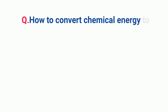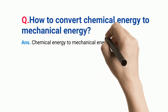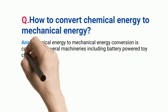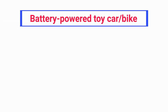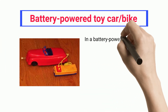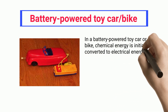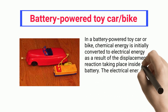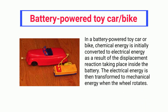How to convert chemical energy to mechanical energy? Chemical energy to mechanical energy conversion is common in several machineries, including battery-powered toy cars and bikes, cars, clocks, etc. In a battery-powered toy car or bike, chemical energy is initially converted to electrical energy as a result of the displacement reaction taking place inside the battery. The electrical energy is then transformed to mechanical energy when the wheel rotates.